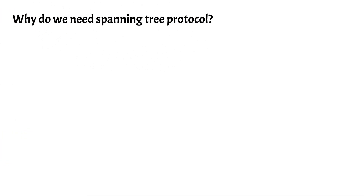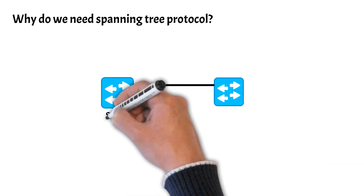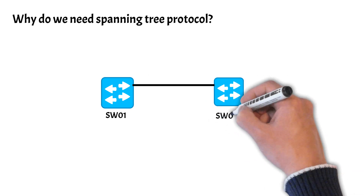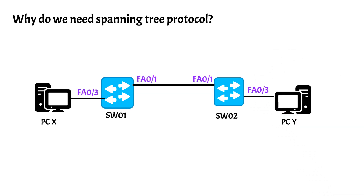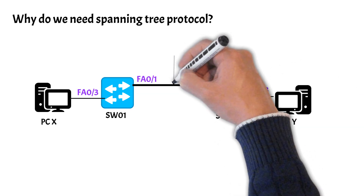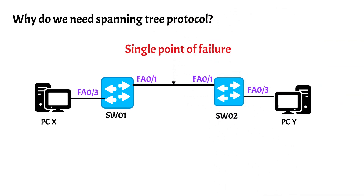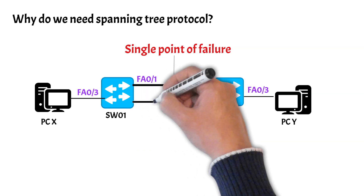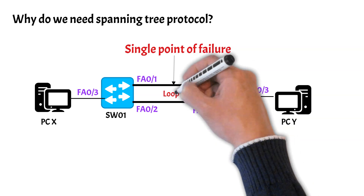So why do we need spanning tree protocol? Let's take an example of a small network where you have two switches — one switch on a ground floor and another on the first floor — with PCs connected to both switches. There is a single point of failure, meaning no redundancy, so we add another link for redundant connectivity. But just like every coin has two sides, a redundant link has advantages as well as disadvantages, and the biggest disadvantage is it creates a loop between switches.